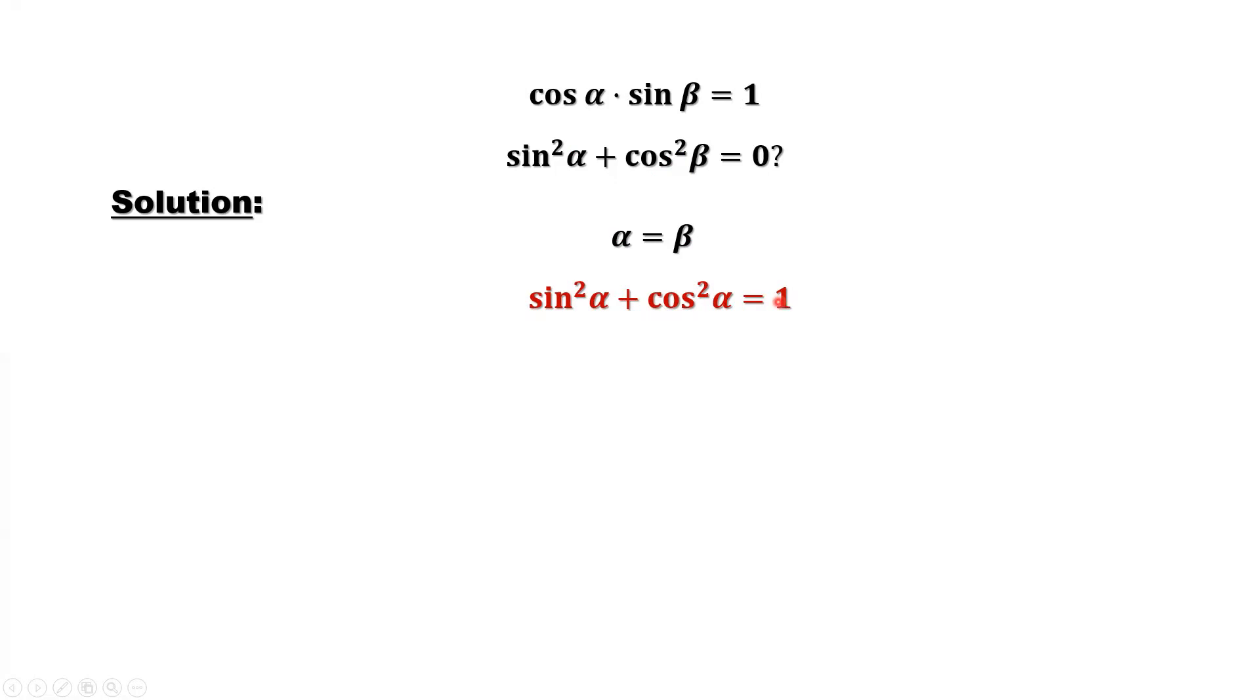In our situation, for the given condition, we want to prove sine squared alpha plus cosine squared beta equals zero. Here, alpha and beta are not the same. It is not given.